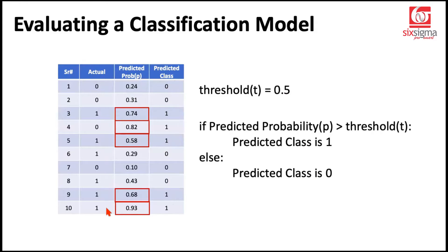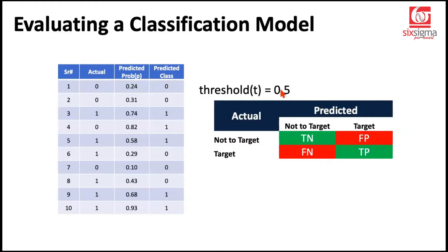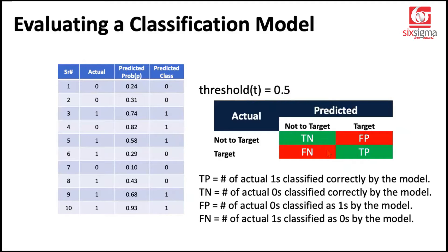Now that we have the ground truth labels and the predicted classes, we can populate a confusion matrix. Let's continue with the threshold of 0.5. To quickly recap: true positives are the actual ones correctly classified by the model. True negatives are the actual zeros correctly identified. These two are marked in green because there is complete synchronization between the actual versus predicted.